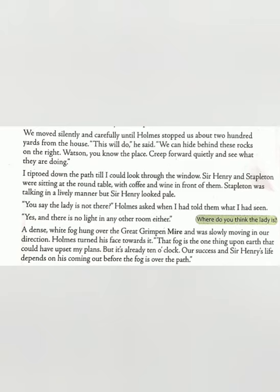A dense white fog hung over the Great Grimpenmire and was slowly moving in their direction. Mire is the area where there is wet mud in which one can easily drown — the Hindi word for this is Dal Dal. There was this huge dense white fog over which they could not see anything else. Holmes turned his face towards it and said that the fog is the one thing upon the earth that could have upset his plans.